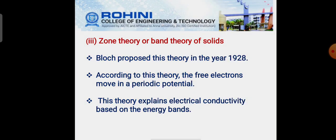Next theory is zone theory or band theory which was proposed by Bloch in the year 1928. According to this theory, the free electrons move in a periodic potential. This theory explains electrical conductivity based on the energy bands.